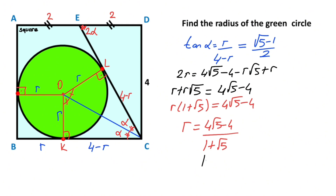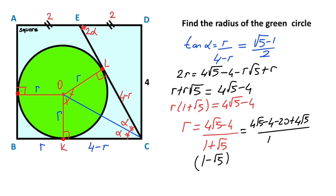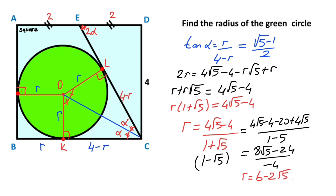Multiplying numerator and denominator by (one minus root five), we get: four root five minus four minus twenty plus four root five, over one squared minus root five squared, which is one minus five equals negative four. Organizing the expression: eight root five minus twenty-four over negative four, giving r equals six minus two root five units.